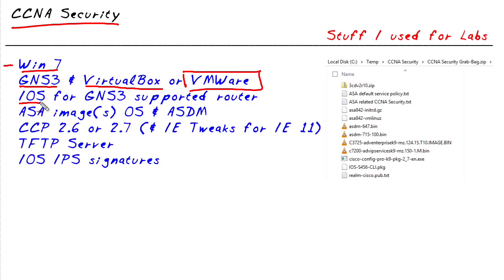You'd also want to have iOS that's supported by GNS3 for your router support, as well as the ASA software that can be used inside of GNS3. You'd also want a copy of ASDM, which is the graphical user interface that we're going to TFTP over to the virtual hard drive on the virtual ASA, so we can use the GUI interface to manage and work with the ASA. We'd also want the graphical user interface called Cisco Configuration Professional, either version 2.6 or 2.7 — that's what we'll use inside of CCNA security to manage a Cisco router.